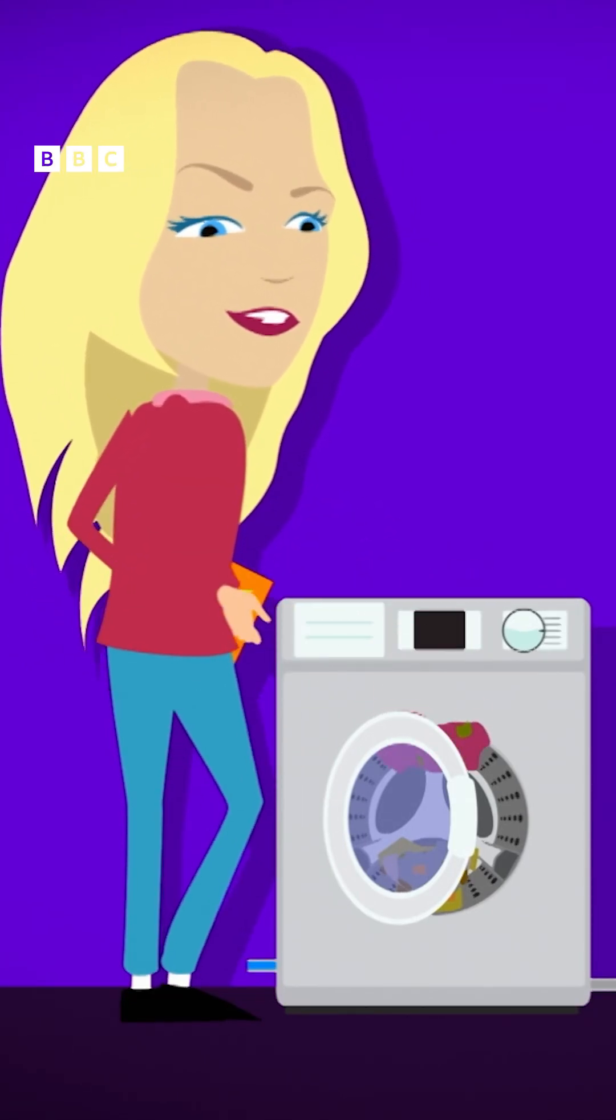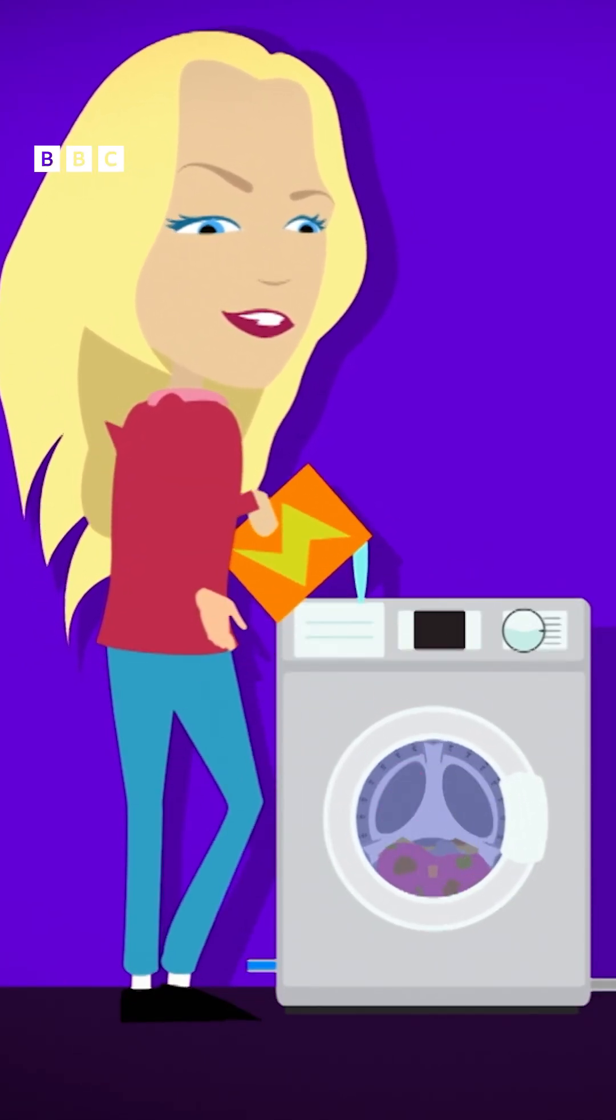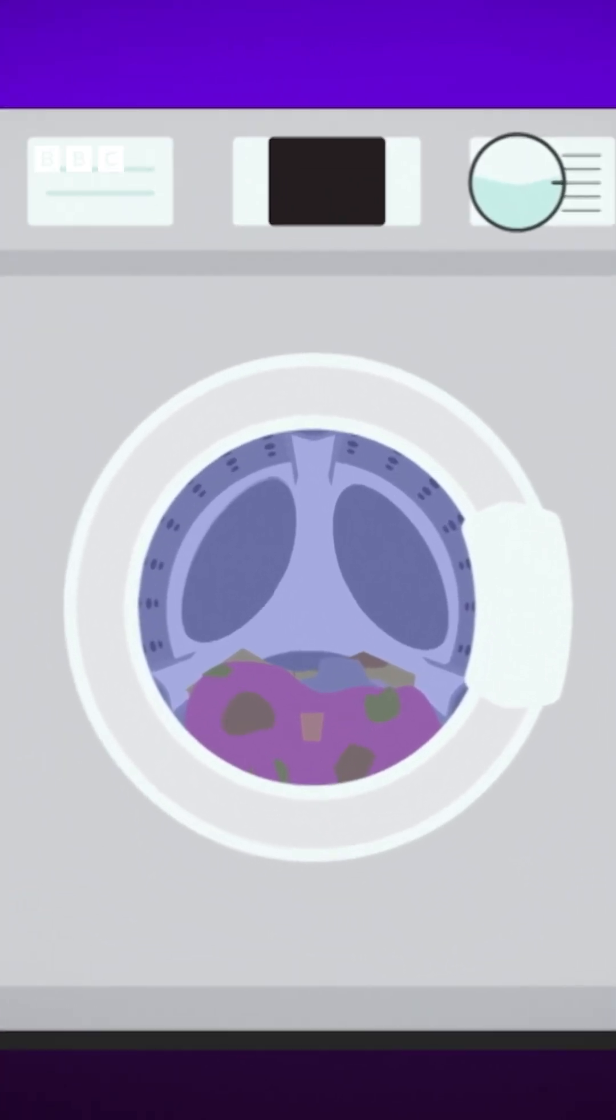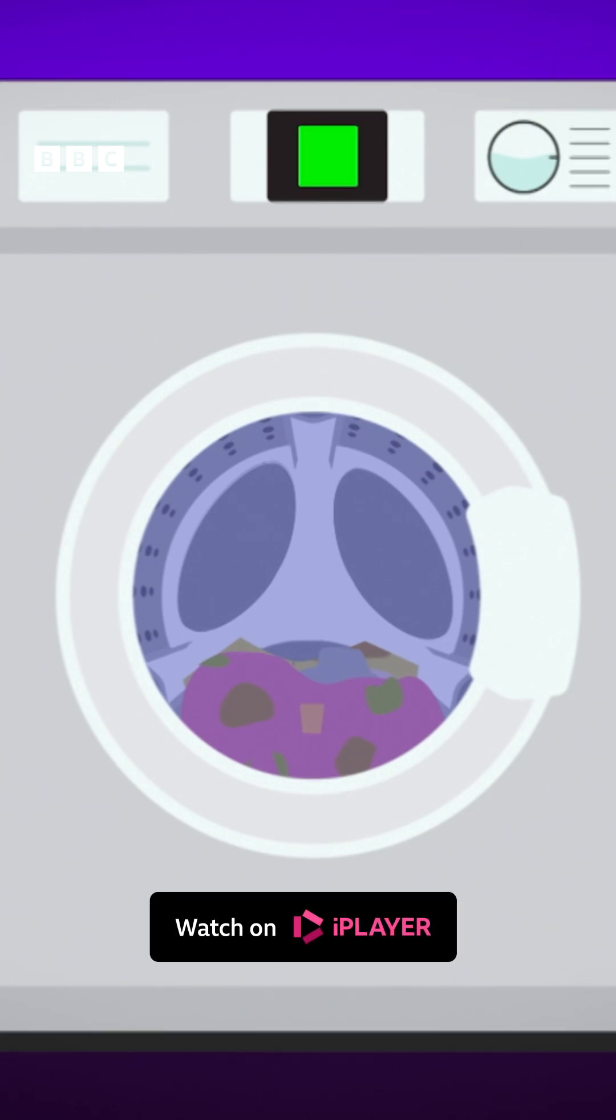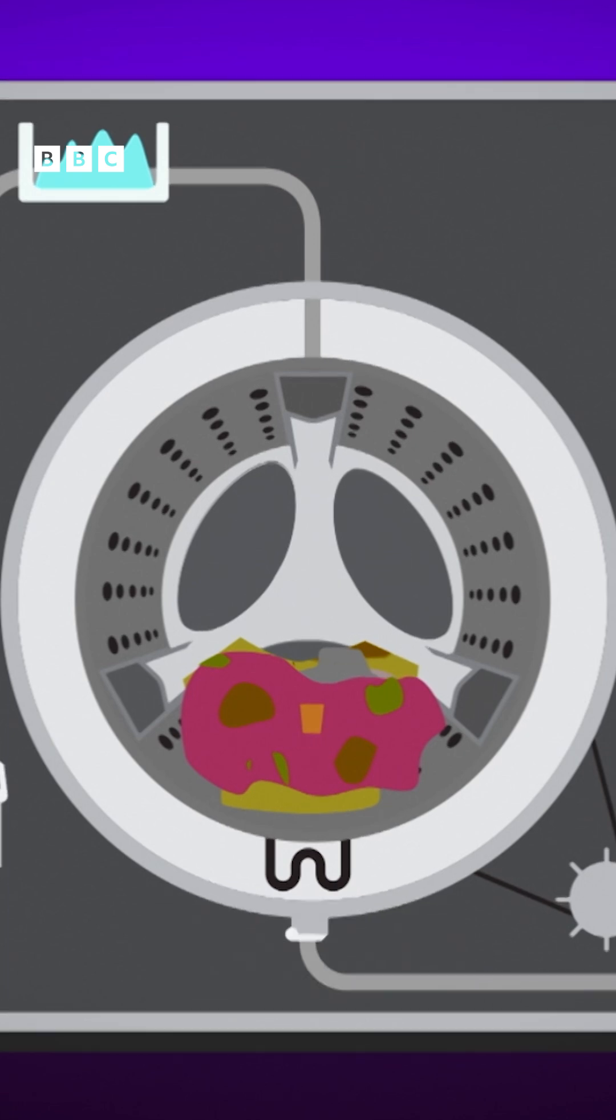When the washing machine is full of clothes and a grown-up has put detergent in the drawer, we press the start button on the control panel. It sends a signal to a valve at the back of the machine which opens to let water in.